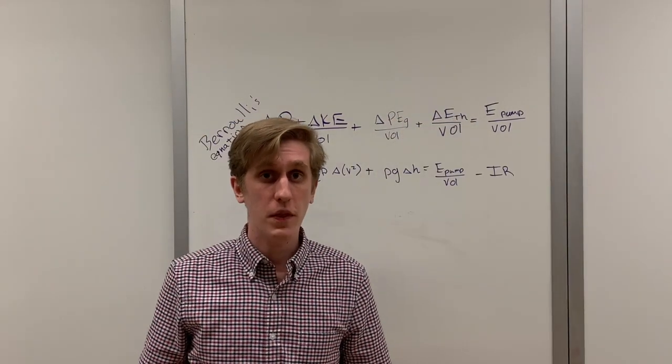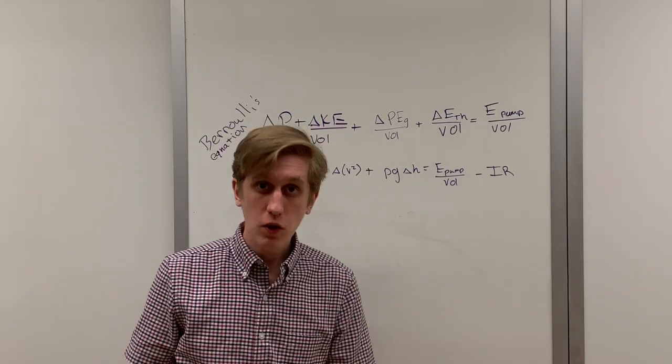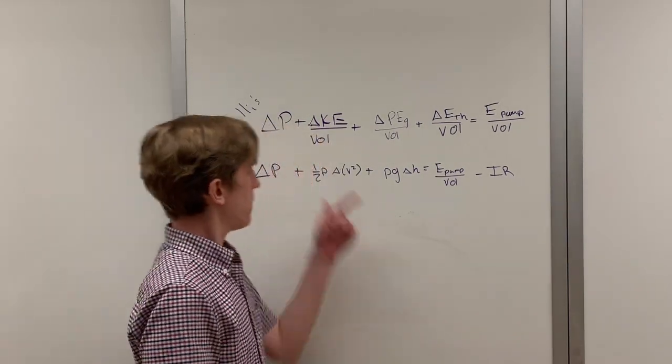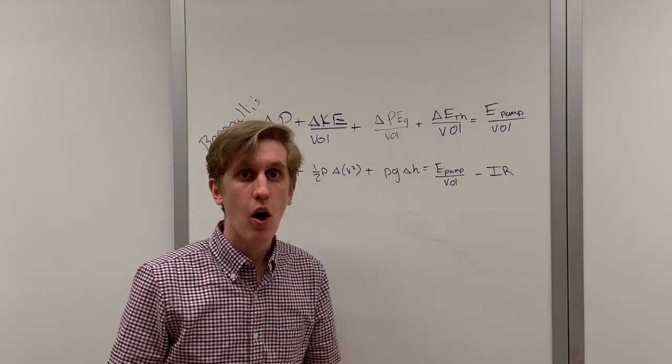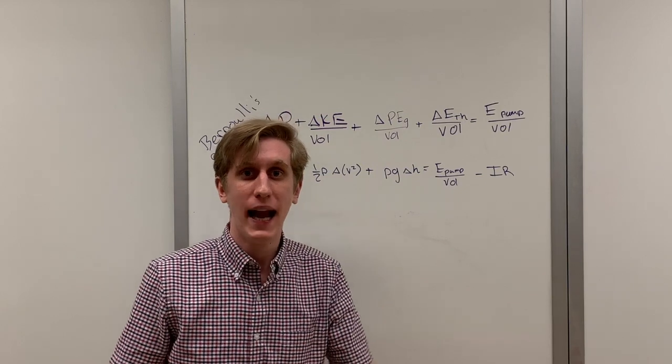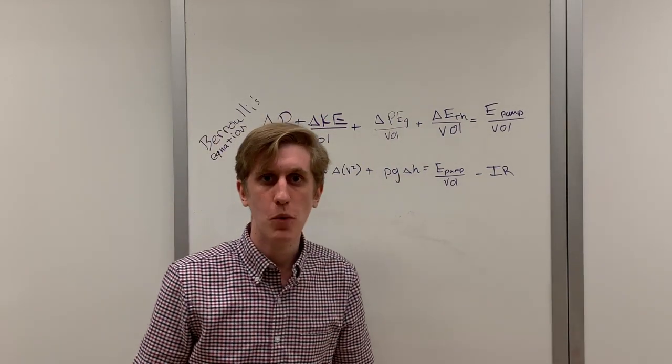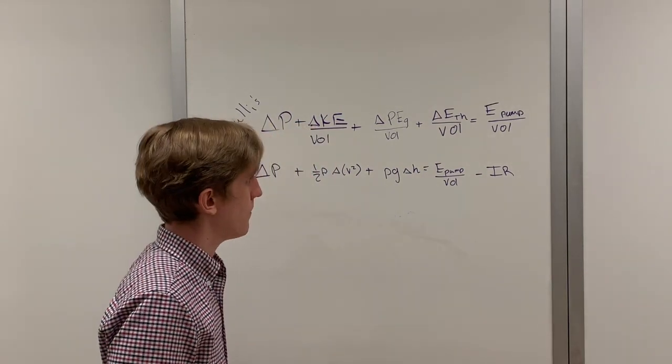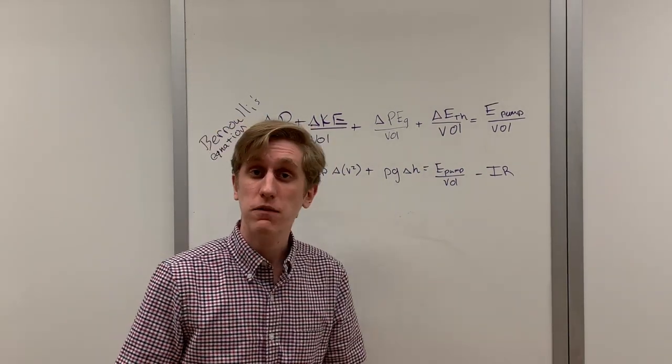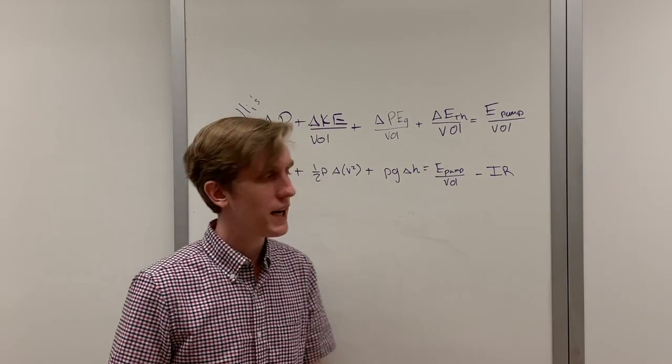We're going to start with the Bernoulli equation. Now there are five main ways that a fluid can have energy. The first is what's known as pressure. The second is kinetic energy, also known as the energy of fluid has because it's moving. The third is gravitational potential energy which you also may remember from physics 7a. Now those are the three main ways that fluid can have energy but there are additional ways that the energy in a fluid can change.